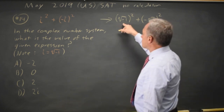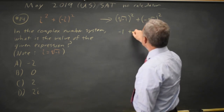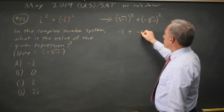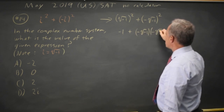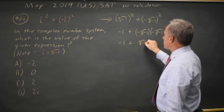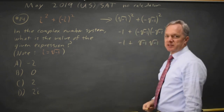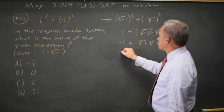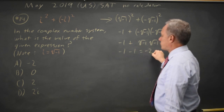The square root of negative 1 squared is negative 1 by definition. And when you square a negative, negative root of negative 1 times negative root of negative 1 is the same as root of negative 1 times root of negative 1, because negative times negative is positive. So we have positive root of negative 1 squared, which is negative 1. Negative 1 minus 1 equals negative 2.